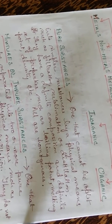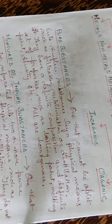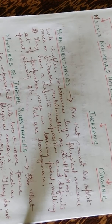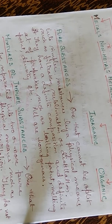Now we come to pure substances. Pure substances are those substances which cannot be split into simpler substances by any physical means or physical process — like filtration, sublimation, distillation or any other physical process cannot split them into simpler substances.